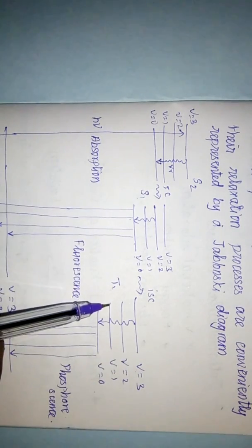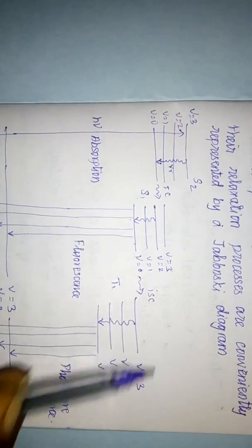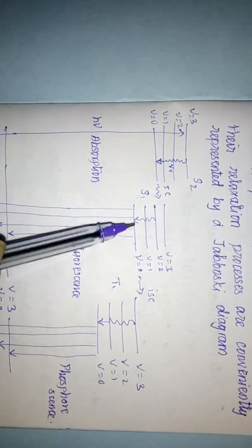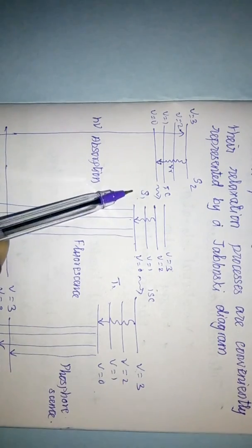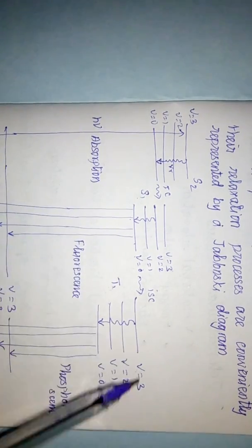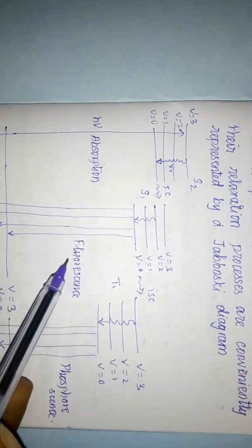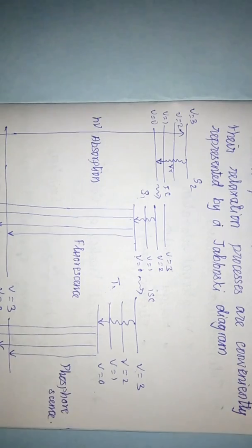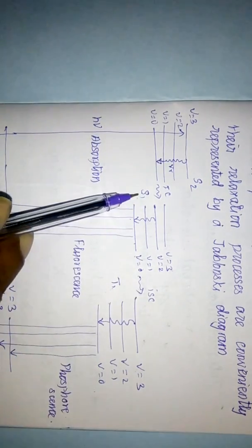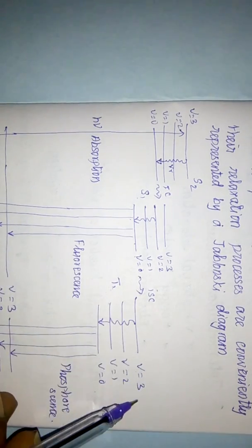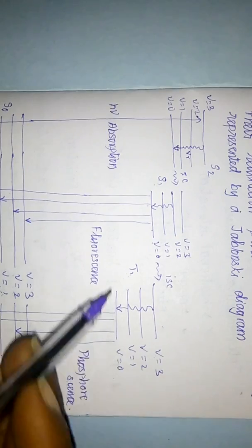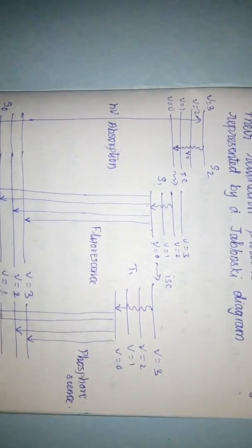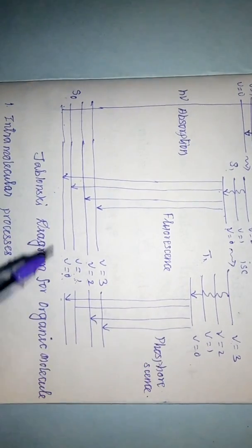From the S1 state it can move to the ground electronic level via fluorescence, or it can move to the triplet excited state via inter-system crossing (ISC). During ISC from S1 to T1, the spin states are changing — from singlet to triplet — so it is not a spin-allowed process. During fluorescence it moves from S1 to S0, which is spin-allowed. After ISC to T1 it relaxes to the ground vibrational level of T1, and from there it can move to the ground electronic level via phosphorescence.